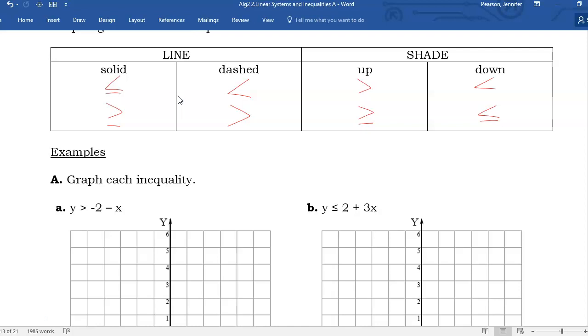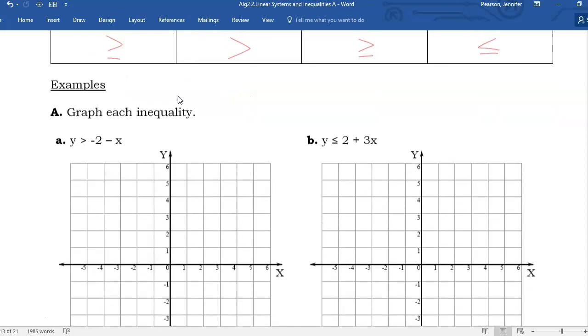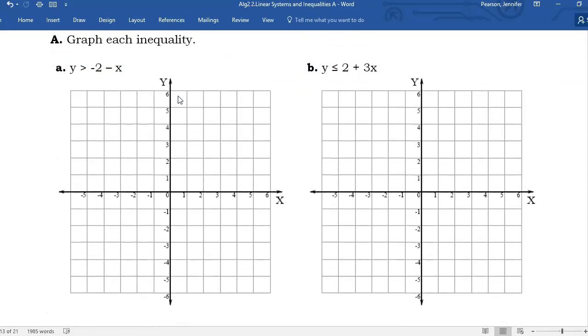So let's try the first one. y is greater than negative 2 minus x. This is already in mx plus b form. I have my intercept at negative 2. I have my slope is technically negative 1, because there's an invisible 1 in front of that x. And I like to go over 1 in a fraction, so that I have my rise and my run.